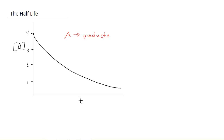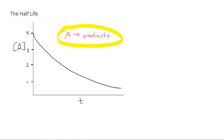Hi, chem students. I want to talk about a concept called the half-life. The half-life is kind of an easy idea, but sometimes it becomes a computational problem for people because they don't understand how to best look at it. So let's start by looking at a graph of some reaction. This reaction is going to be just A breaking apart into a product, and we're going to monitor that as time goes on. We notice it makes a nice curve.